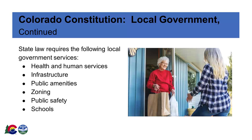Additionally, Colorado has about 2,600 special districts that provide specific services and are spread throughout the state. Special districts can be categorized into approximately 36 different types, including parks and recreation, library, and mental health care service districts, among others.